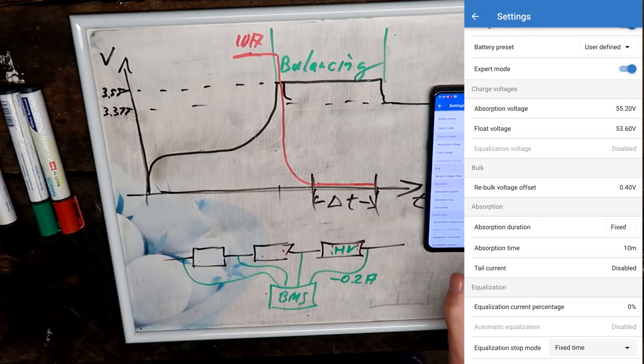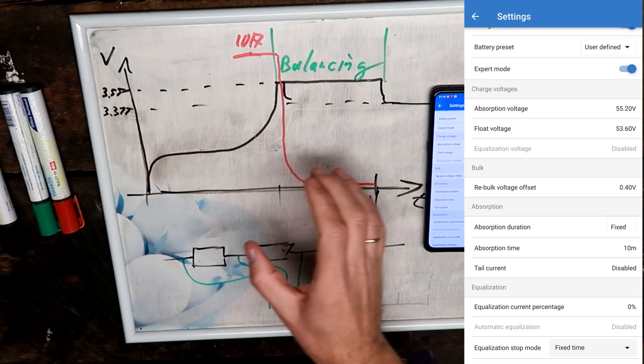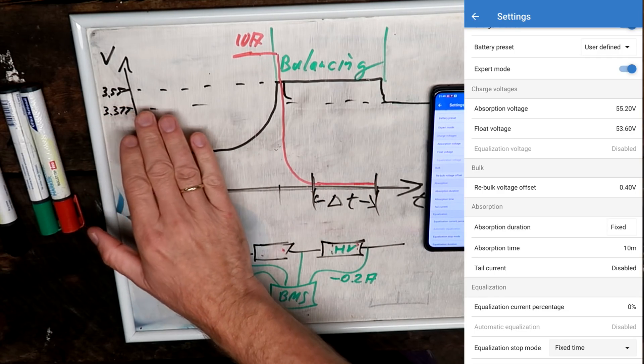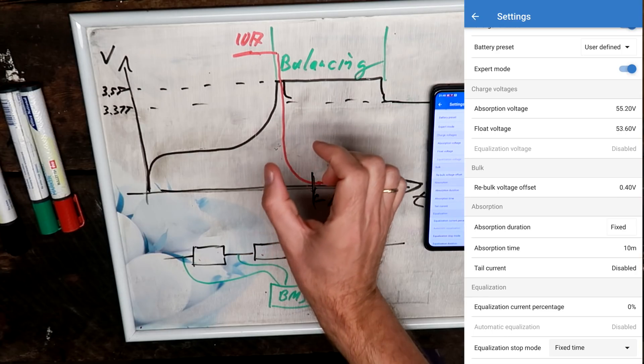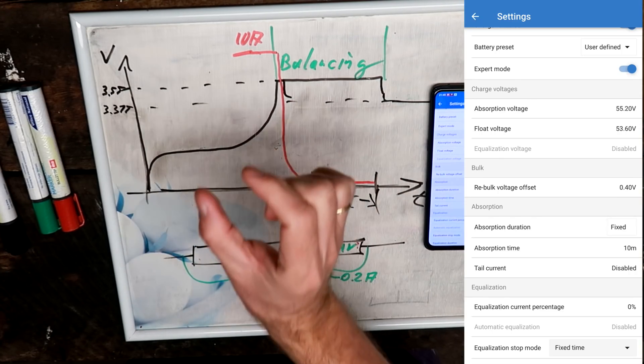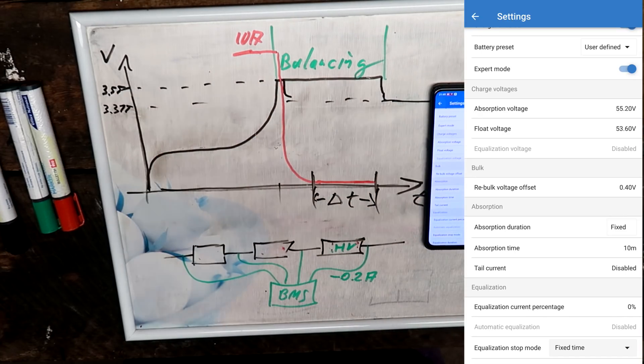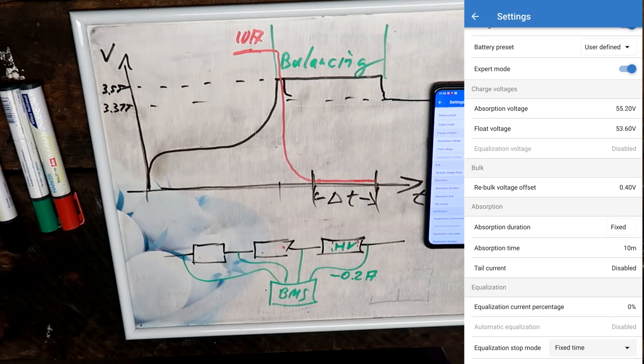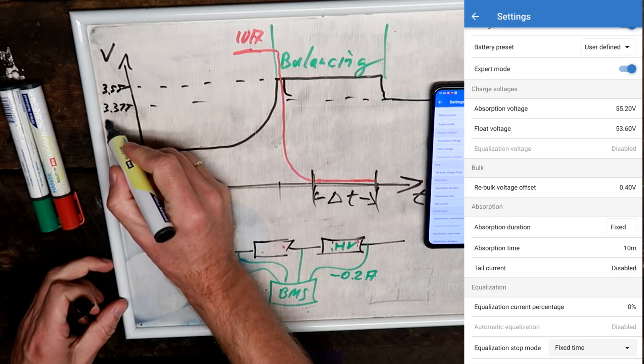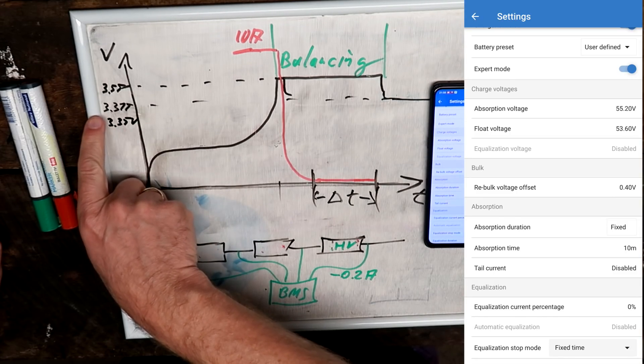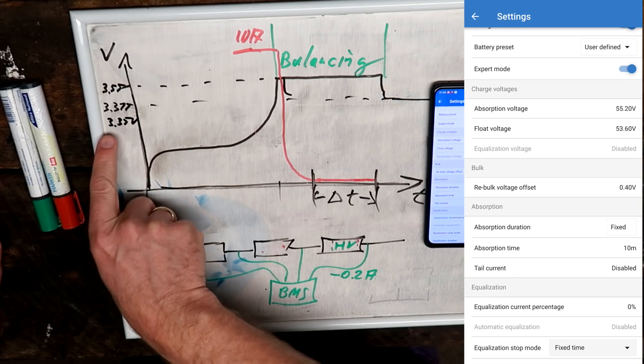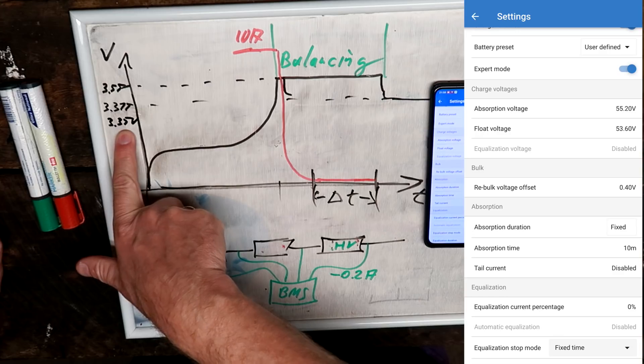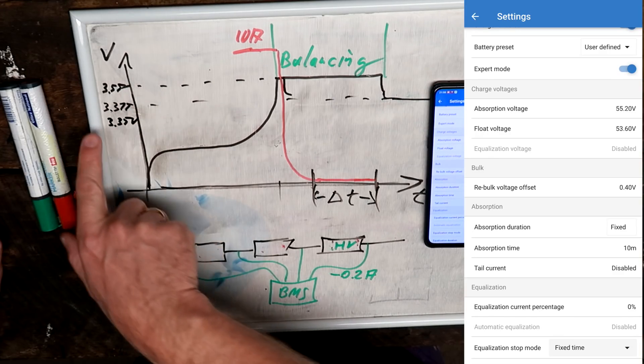Because I don't have the absorption time, the smart shunt never triggered correctly and it showed me always wrong values. So I'm experimenting with this 10 minute window now. I keep the battery on 3.45 volts for 10 minutes, and this is the window the smart shunt recognizes. Then I go down to 53.6 volts, which is 3.35 volts. I'm not too concerned about the 3.375 volts they have set or my 3.35 volts. That is fine, either or is totally fine. But the 3.55 volts for 2 hours, I think this is too long.